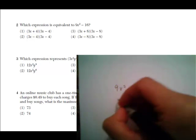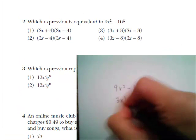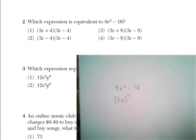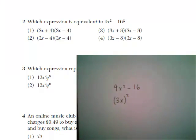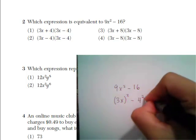Well we can rewrite 9x squared as the quantity 3x squared, and we can rewrite 16 as 4 squared.